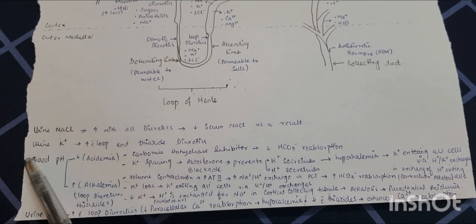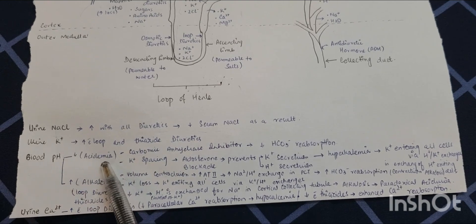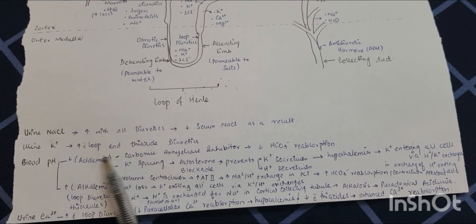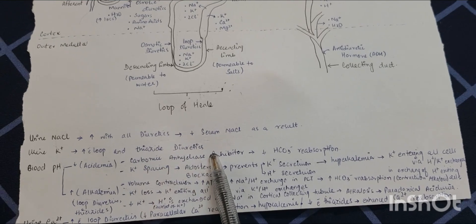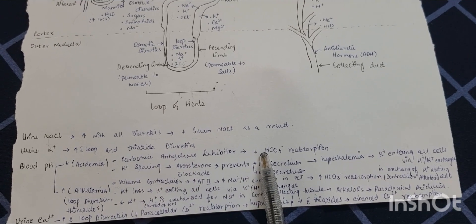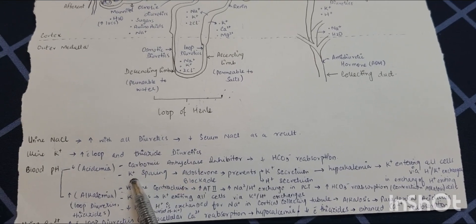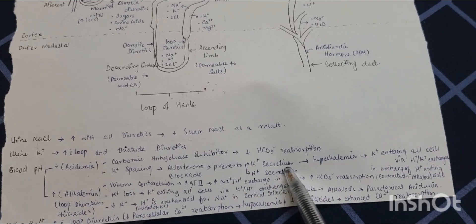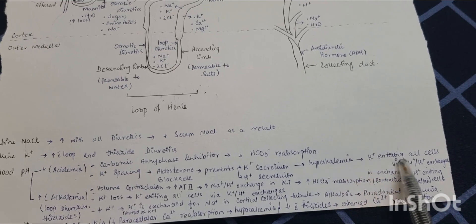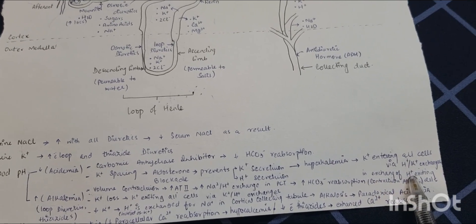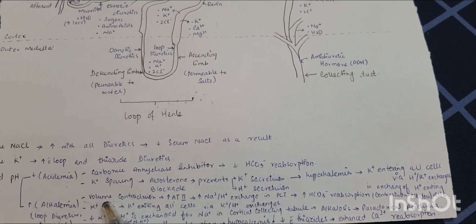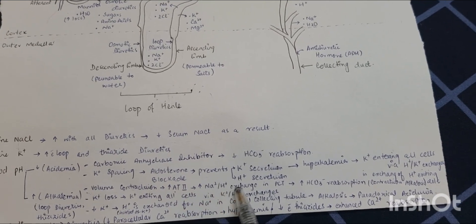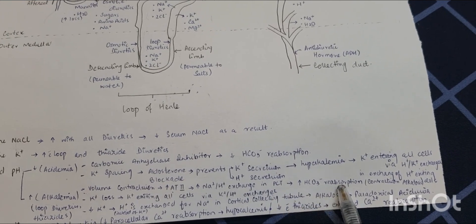The effect of diuretics on blood pH may result in two conditions: acidemia (decreased pH) and alkalemia (increased pH). For acidemia: carbonic anhydrase inhibitors decrease bicarbonate reabsorption. Potassium-sparing diuretics block aldosterone, preventing potassium and hydrogen secretion, resulting in hyperkalemia — potassium enters all cells via the hydrogen-potassium exchanger in exchange for hydrogen ions. Volume contraction increases angiotensin 2, which increases sodium-hydrogen exchange in the proximal convoluted tubule, increasing bicarbonate reabsorption — hence contraction alkalosis.